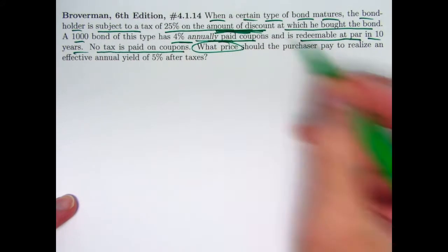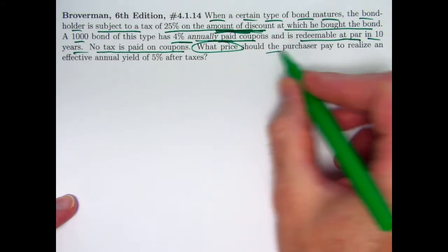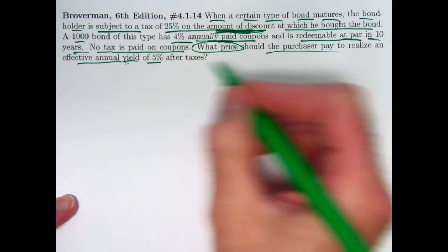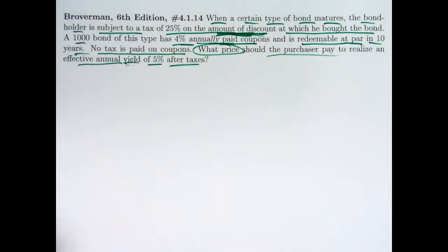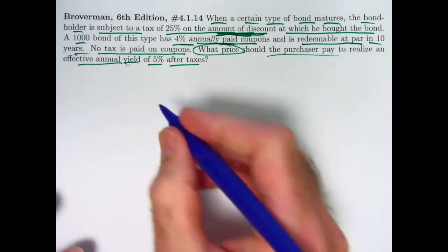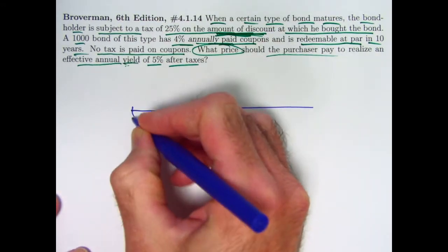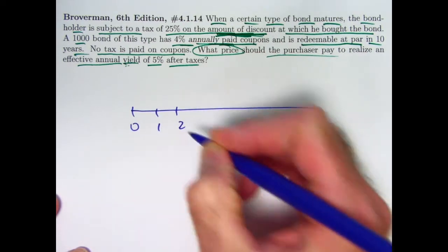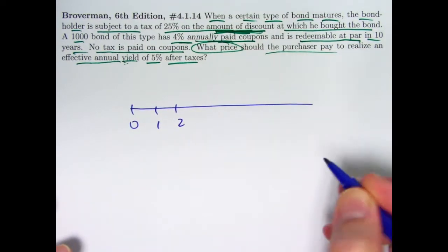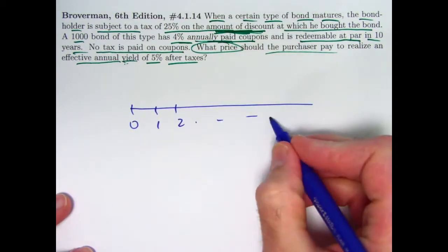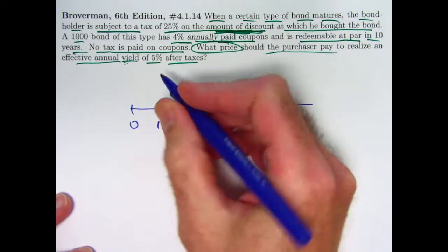The question is: what price should the purchaser pay to realize an effective annual yield of 5% after taxes? We can solve this pretty easily with just one timeline, where these times are in years — not half years — over 10 years.